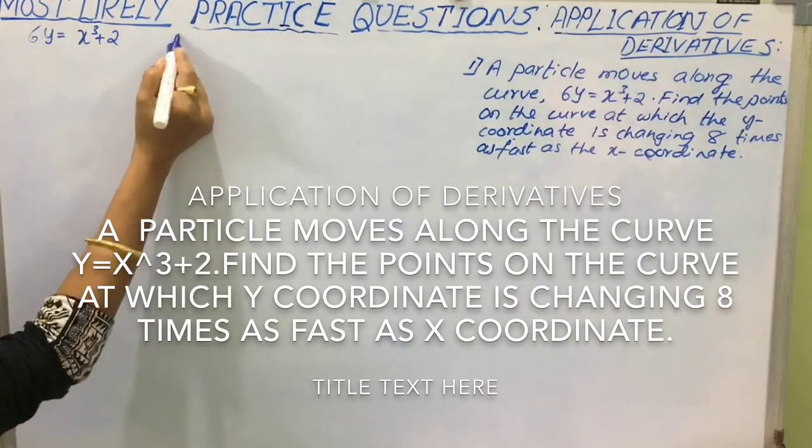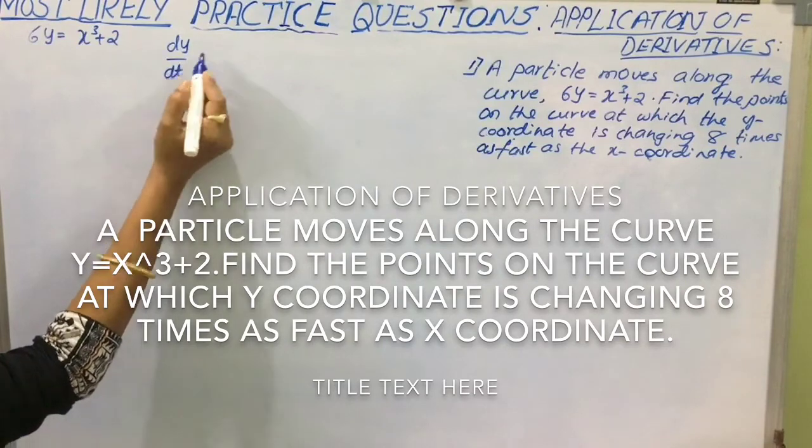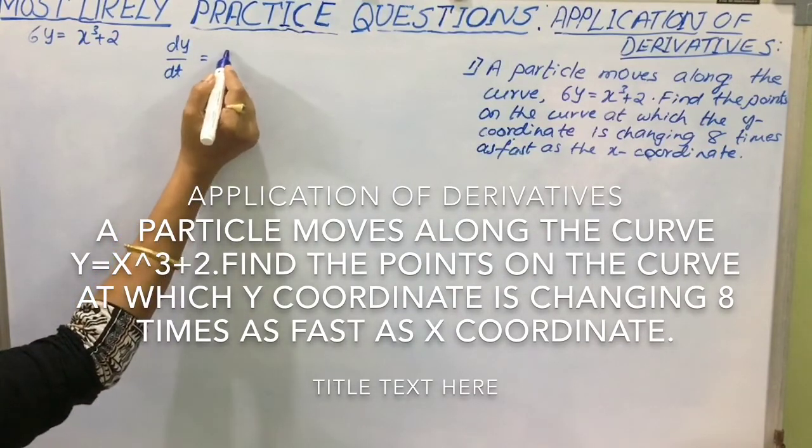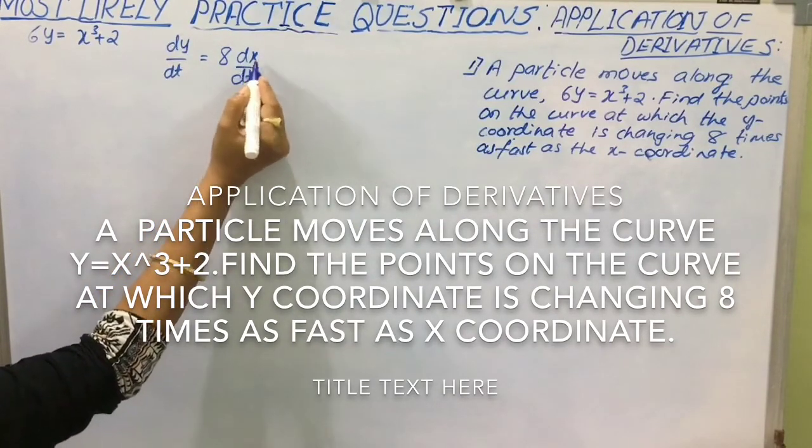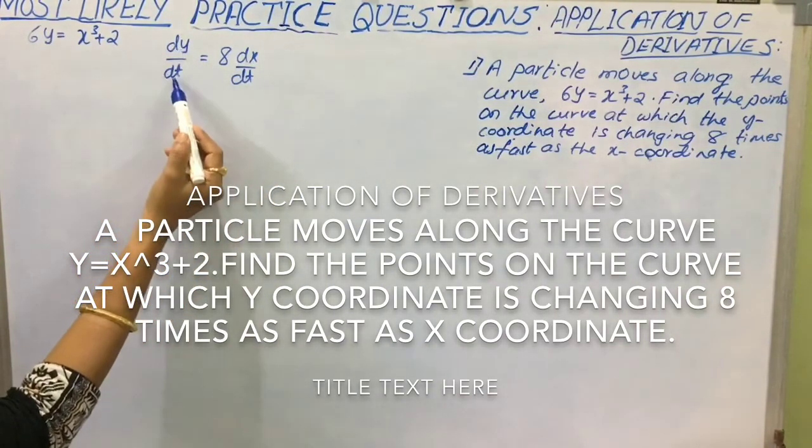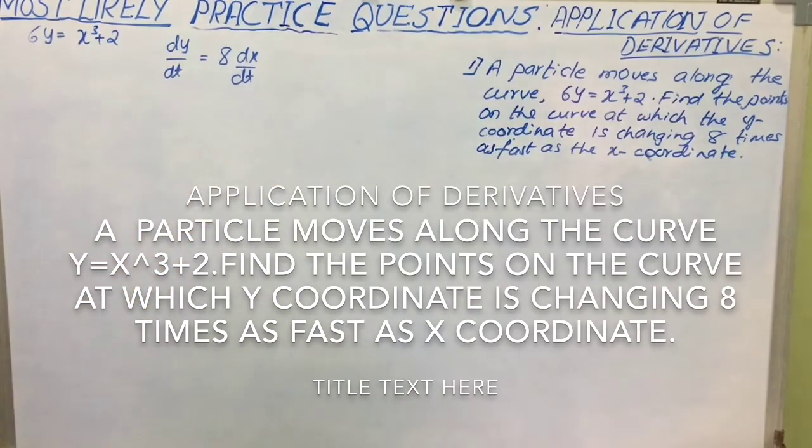So rate of change of y coordinate with respect to time considered to be dy by dt. This is equal to 8 times rate of change of x coordinate that is dx by dt. So dy by dt is equal to 8 times dx by dt.